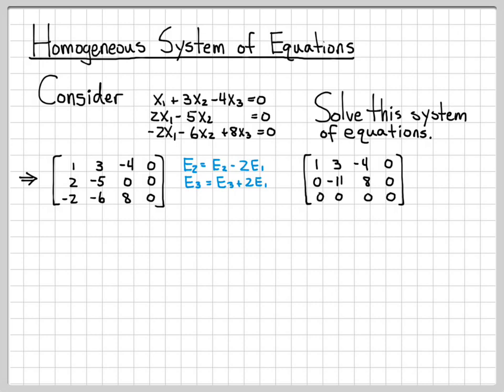Let's go ahead and let equation two equal negative one eleventh times E2 to turn this negative eleven into a one. Rows one and three remain unchanged, but equation two will be multiplied by negative one over eleven. We now have a one there like we wanted, and row three is all zeros still.